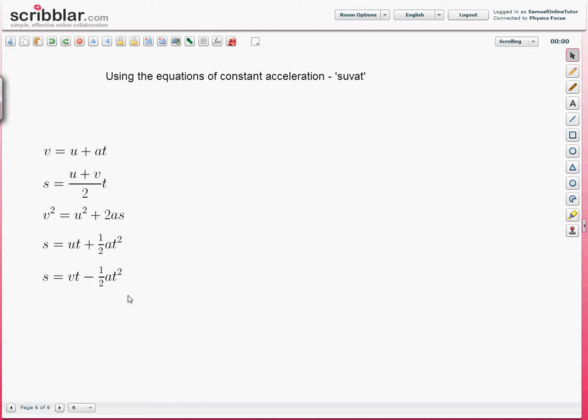And you should be familiar by now with what these five letters mean. U is the initial velocity, V the final velocity, S the distance travelled, A the acceleration, and T the time taken from the start to the finish of whatever you're talking about.